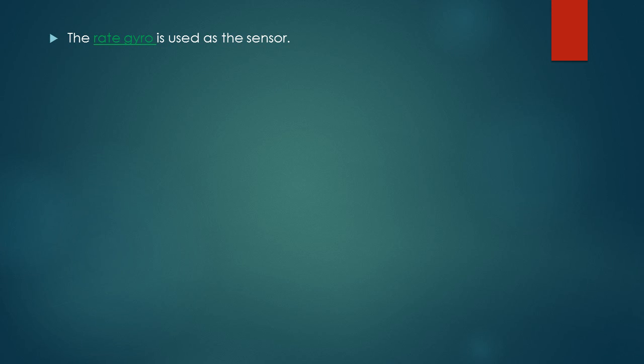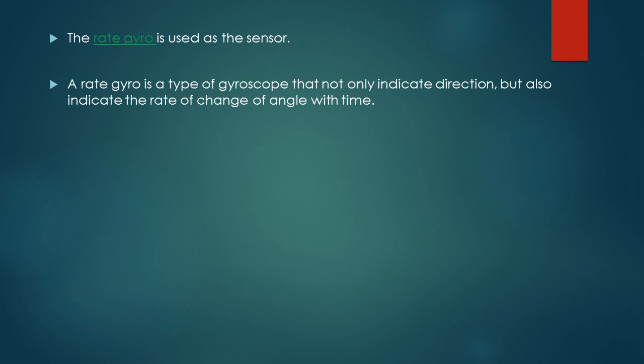So for the stability augmentation system, the rate gyro is used as the sensor. Rate gyro is a type of gyroscope that not only indicates direction like other gyros, but also indicates the rate of change of angle with time.